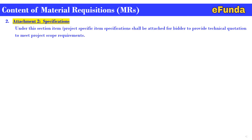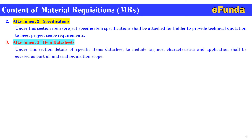Attachment 2 is the specification. Under this section, project-specific item specifications shall be attached for the reader to provide a technical quotation to meet the project scope requirement. This is an additional document and will be part of the MR attachment. Attachment 3 is the item data sheet. Under this section, details of a specific item data sheet — including tag number, characteristics, and application — shall be covered as part of the material requisition scope.